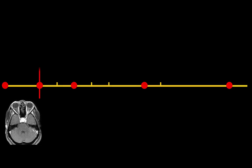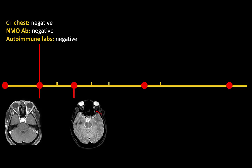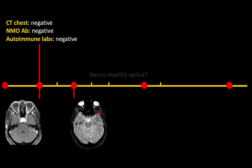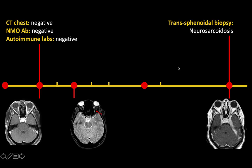This is a grand rounds we gave on a case of neurosarcoidosis, initially misdiagnosed as optic neuritis. The patient initially presented with unilateral optic neuritis; CT chest was negative; NMO antibodies and autoimmune labs were all negative. She came back with recurrence in the same location, leading to consideration of atypical optic neuritis, then NMO spectrum disorder, then sarcoidosis. She was then lost to follow-up for several months and came back with florid granulomatous inflammation, and biopsy confirmed neurosarcoidosis. This way we summarized the entire clinical course visually in one slide instead of across several.